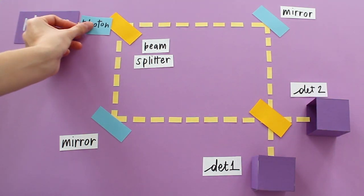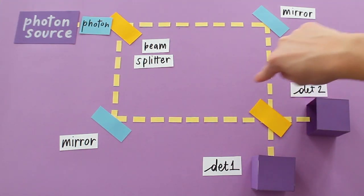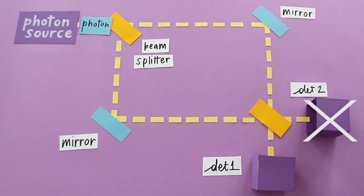If a photon enters the system with a second beam splitter that closes the interferometer, the experiment shows that only detector 1 clicks, while detections never appear in detector 2.